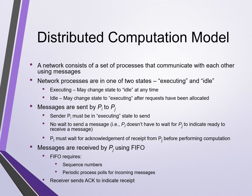Distributed computation model. Chandi, Misra, and Haas define a network as consisting of a set of processes that communicate with each other using messages. Networked processes are in one of two states: either executing or idle. In the executing state, processes may change state to idle at any time. In the idle state, they may change state to executing only after requests have been allocated. Sender P sub I must be in the executing state to send a message to P sub J — there is no wait to send a message. P sub J must wait for acknowledgement of receipt from P sub J before performing its computation. Messages are received using first-in-first-out FIFO, which requires sequence numbers and periodic process polls for incoming messages. The receiver must send an acknowledgement to indicate receipt.